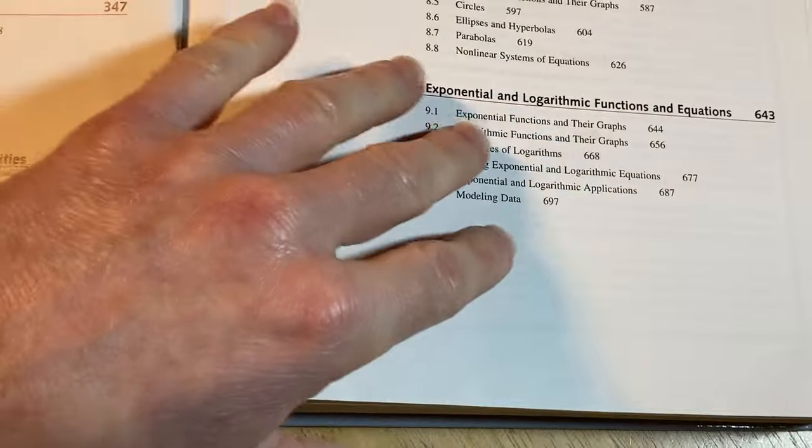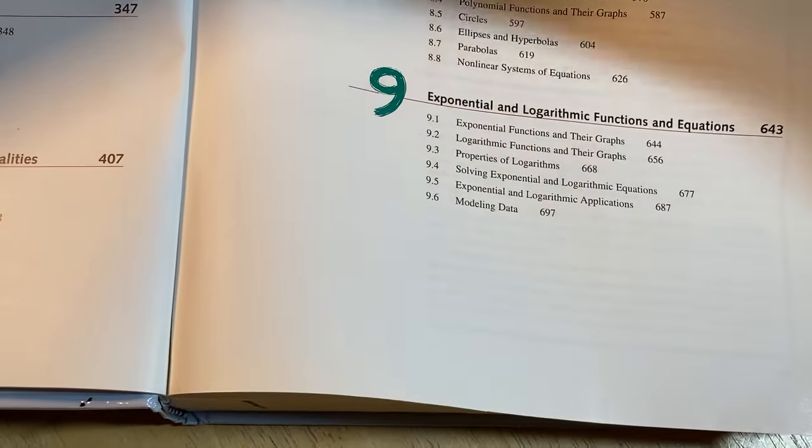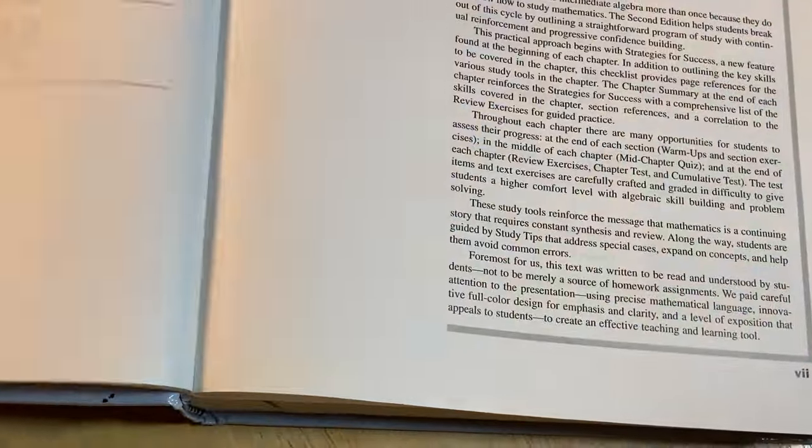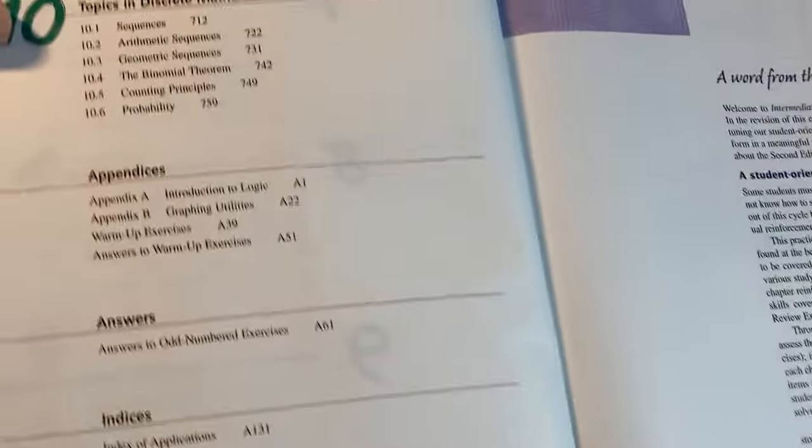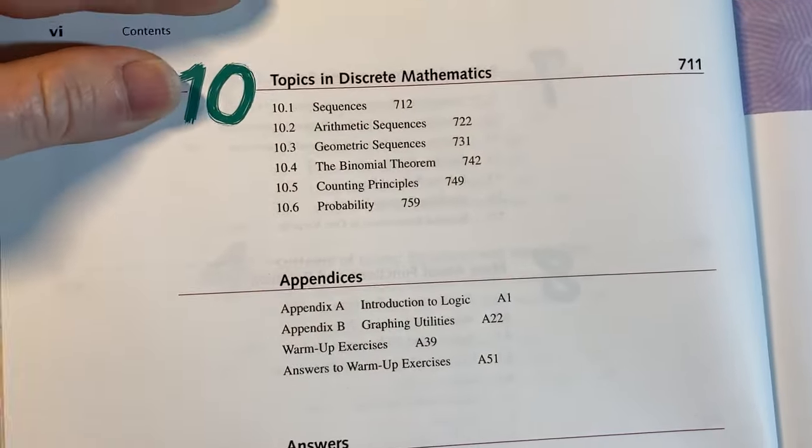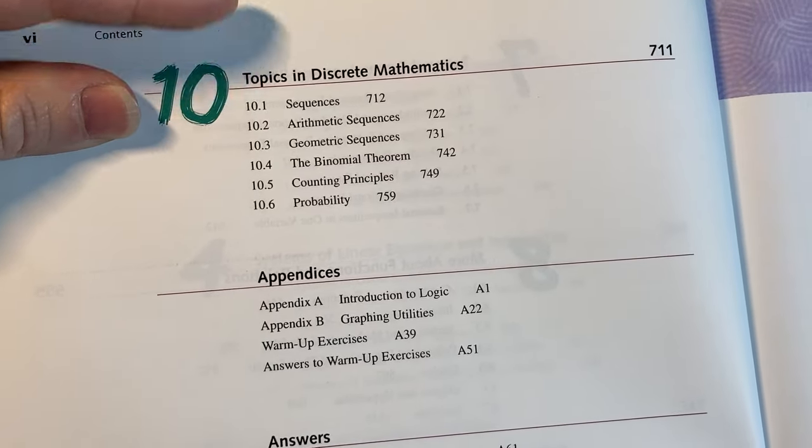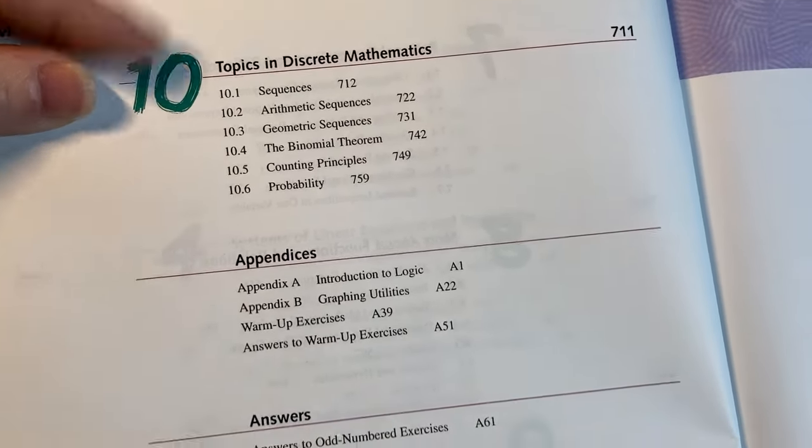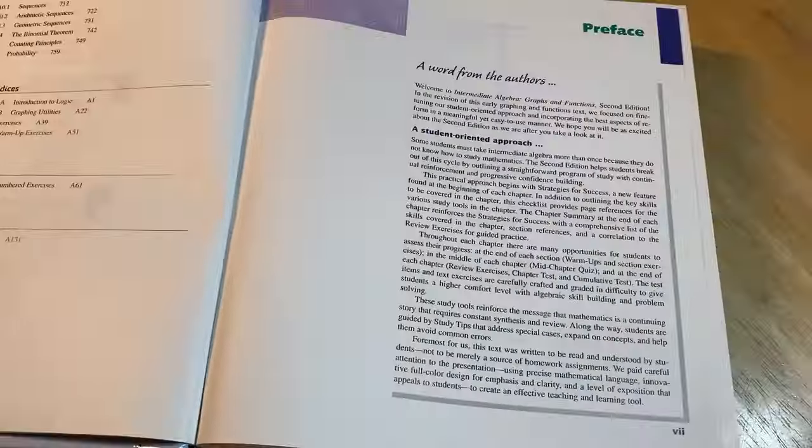This is something that you typically don't see in a lot of intermediate algebra books. So it's kind of cool that this one includes it. And this also has topics in discrete mathematics. So if you're going into computer science this might be something that you see later because you have to take a discrete math class typically as a computer science major.